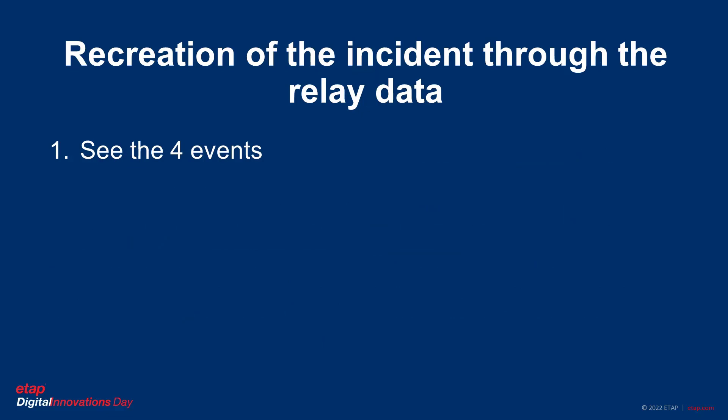Before we start with the events, we should note that there are four events associated with this incident. The reason is that the relay memory for an event is restricted to a specific programmable length. This relay was programmed to only capture 25 cycles. So after 25 cycles, the relay ended the event. Since the fault was still present, the relay created another event right away and kept capturing the incident. It did so three times for a total of four events.